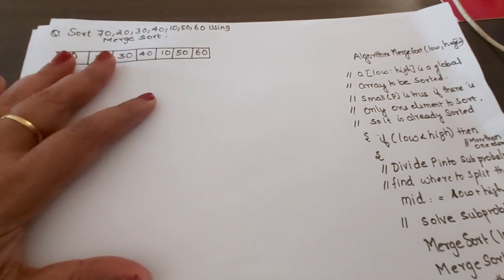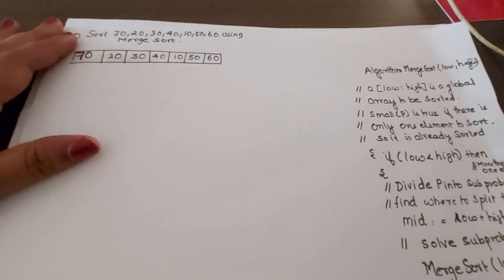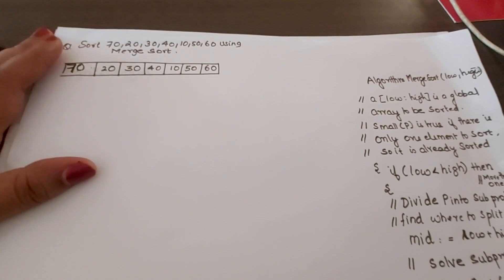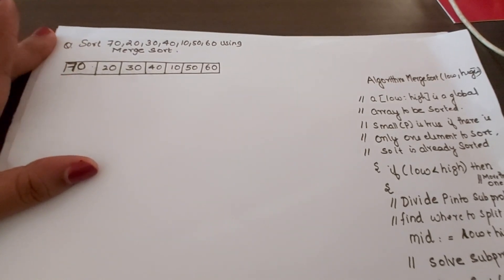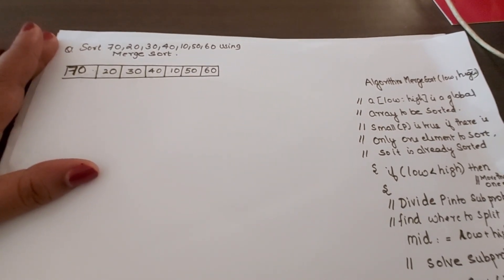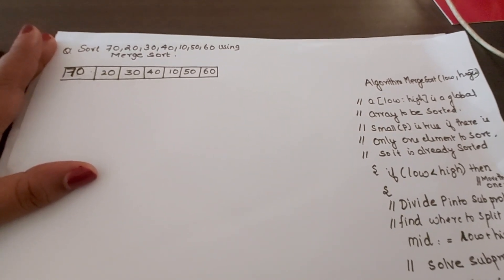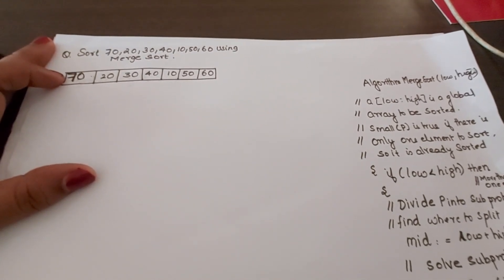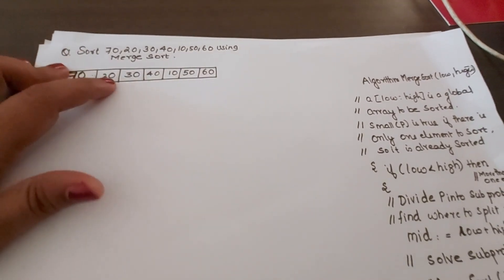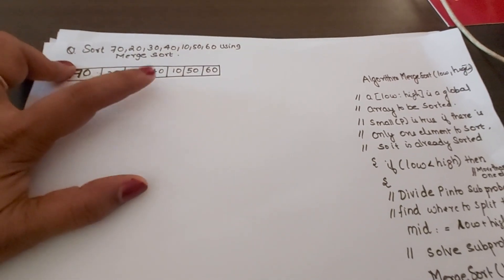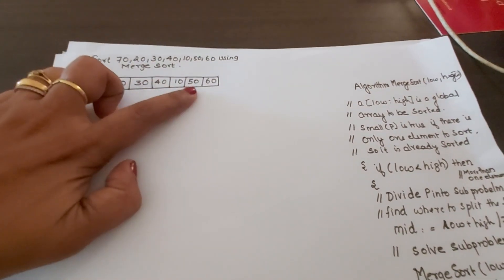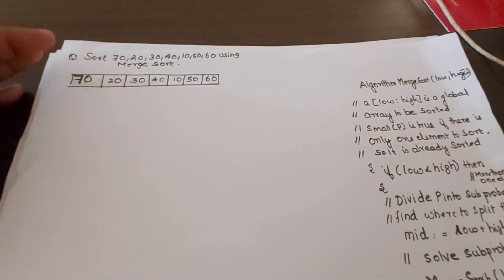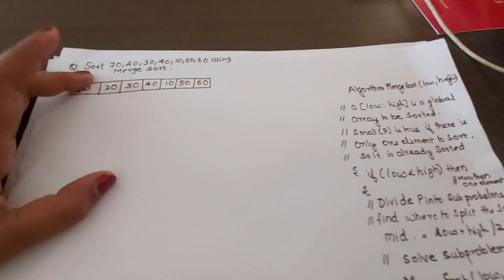Let us do a problem. The question is: sort 70, 20, 30, 40, 10, 50, 60 using merge sort. I have arranged these values into an array.